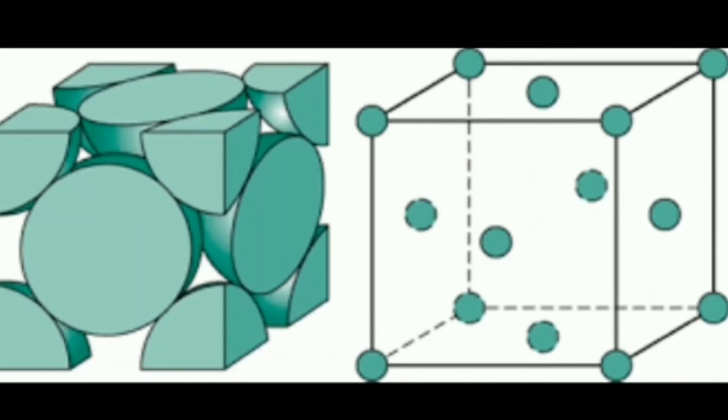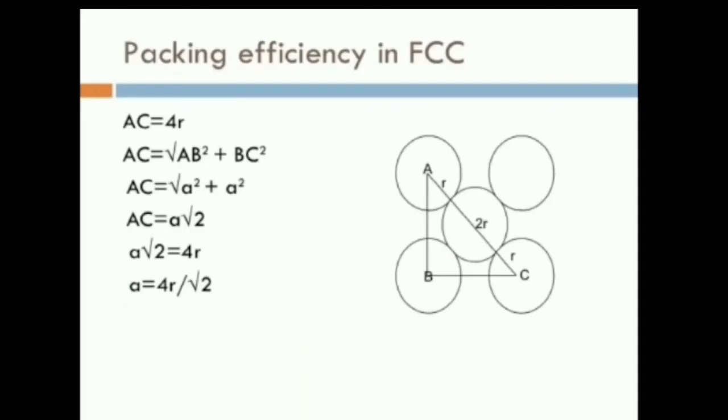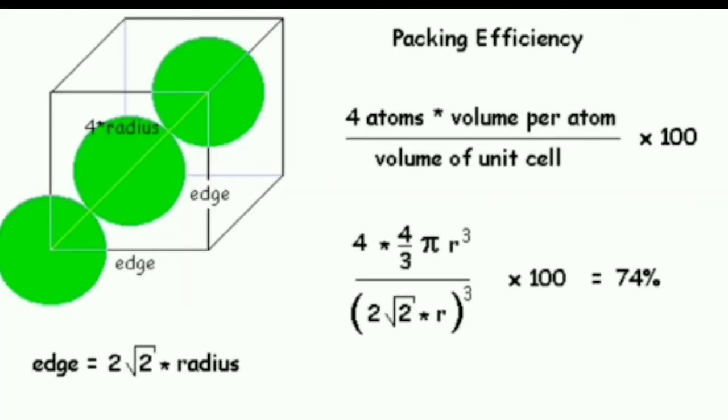Packing efficiency in FCC. Here is the right angle triangle ABC. AC = 4R. AC = √(AB² + BC²) by Pythagoras theorem. AC = A√2. A√2 = 4R. A = 4R/√2. Packing efficiency: 4 atoms × volume per atom / volume of unit cell × 100 = 4 × (4/3)πr³ / (2√2 × R)³ × 100 = 74%.